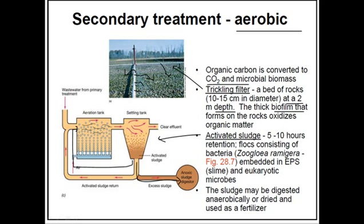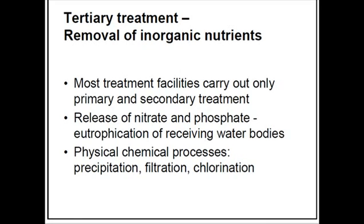After digesting the sludge through anoxic processes, we produce methane — bundled methane. Finally, we have the leftover of the sludge, which we use as fertilizer or cattle feed.